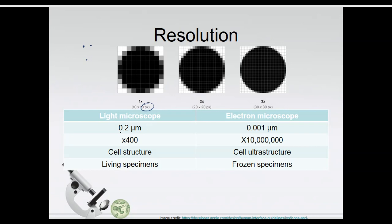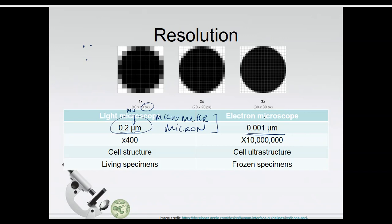With a light microscope, I could have two objects that are 0.2 micrometers apart and tell the difference between them. The Greek letter mu (μ) represents the prefix micro in the metric system — micrometer, sometimes called a micron. But if something was only 0.1 micrometers away from something else in my light microscope, it would blur together and look like a single object. Whereas in an electron microscope, we can distinguish two things only 0.001 micrometers apart — about 200 times closer — and still tell them apart. Light microscopes can magnify to about 400 times before quality decreases drastically, whereas electron microscopes achieve 10 million times magnification.